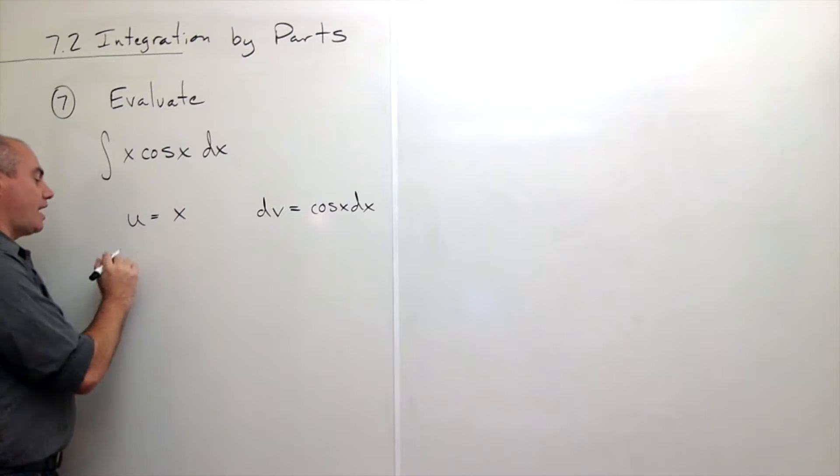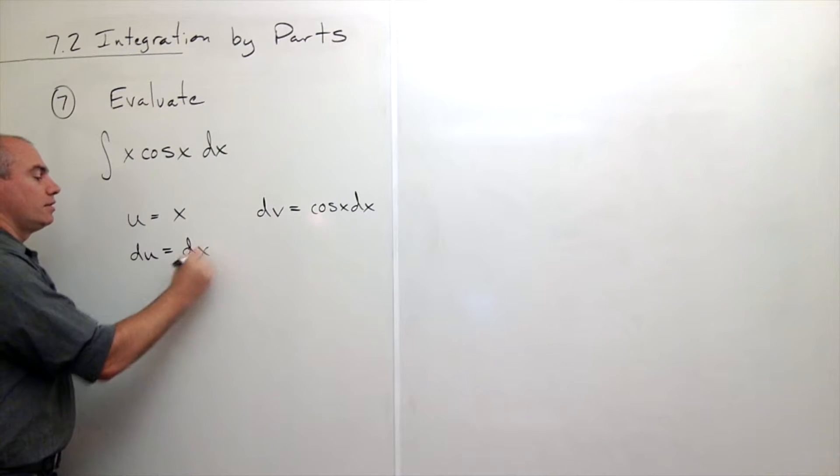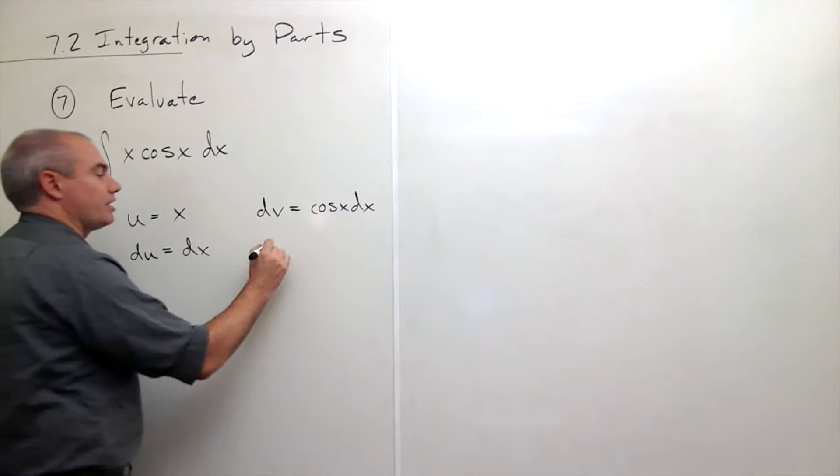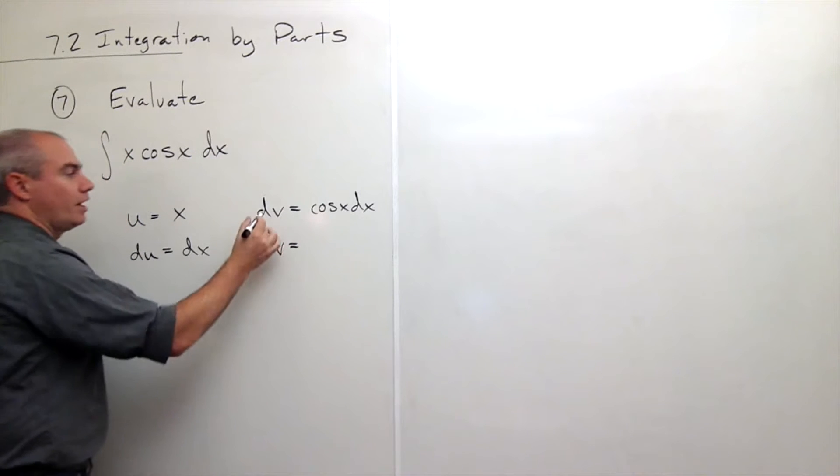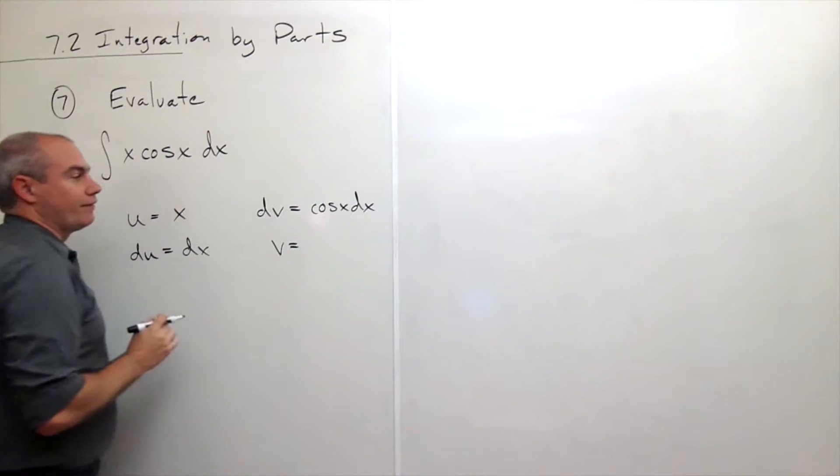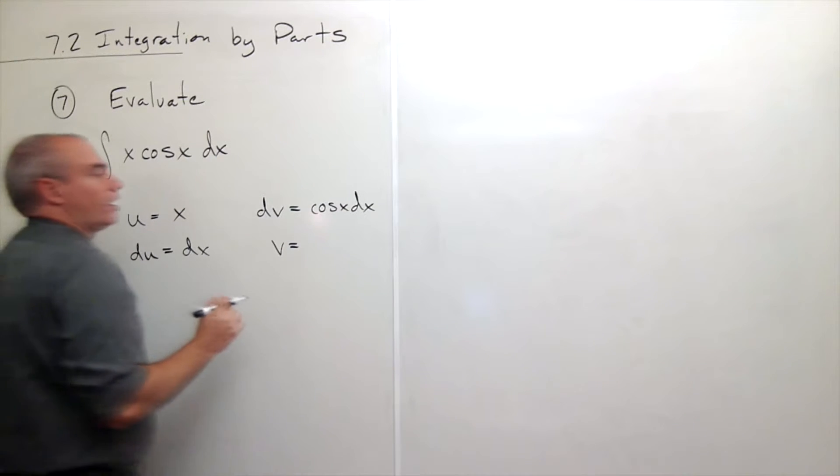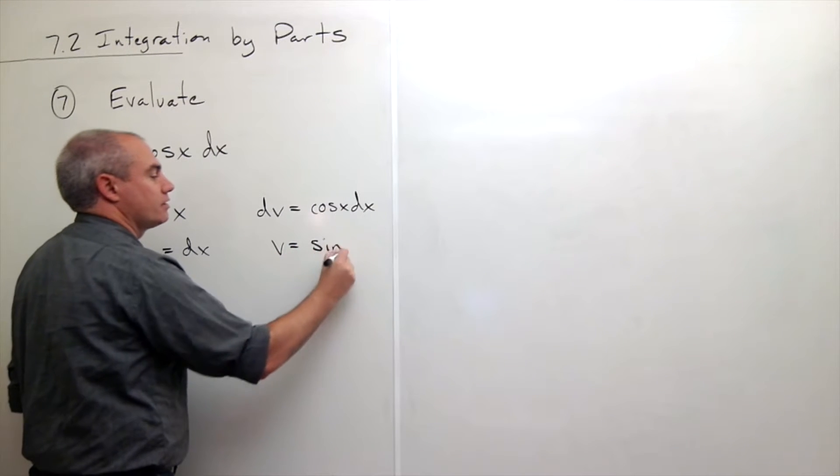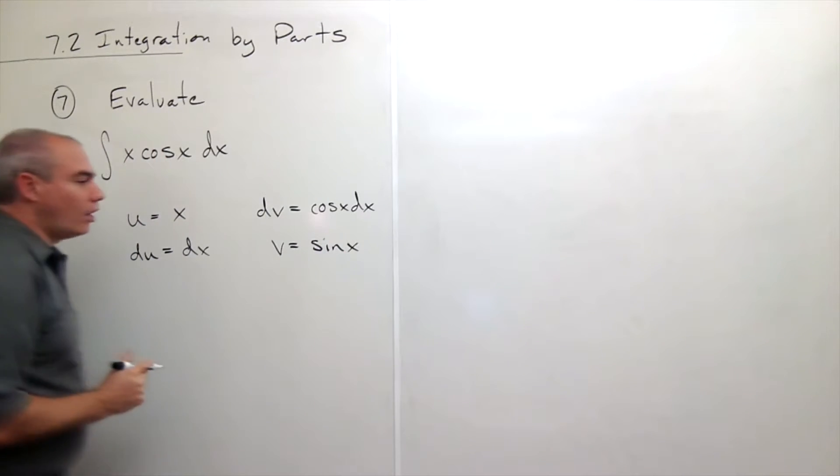Alright, now I'm going to take a derivative, find du, and the derivative of x is dx. Then I'm going to take an antiderivative of dv, or find v, and the antiderivative would be what? Sine of x.